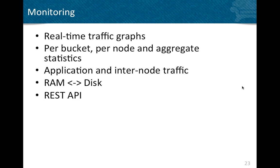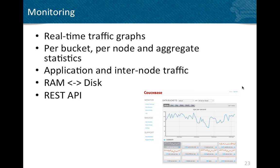Couchbase Server provides real-time traffic graphs, full-bucket monitoring and stats, internal traffic graphs, RAM/disk interplay graphs, and more. There is also a REST API for integrating with other monitoring solutions. All of this is available through the admin console, where you can see statistics, graphs, and drill-down analysis for monitoring.